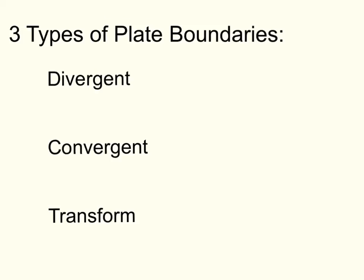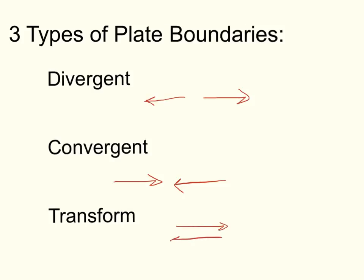There are three types of plate boundaries you need to be aware of. The first kind is divergent, where plates are separating or dividing — moving in opposite directions from each other. The second type is convergent, where two plates are coming together and moving towards each other. The last type is transform, where two plates are going in opposite directions past each other.